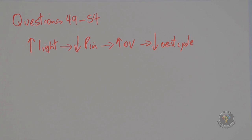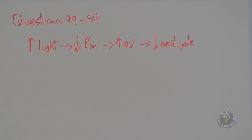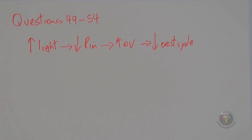The estrus cycle includes a period of heat where sexual activity is largely restricted to that period. These mammals also tend to reabsorb blood from their endometrium. In contrast, humans can be sexually active at any time of the month with no specific period of heat, and humans shed the endometrial blood as menstrual flow rather than reabsorbing it.